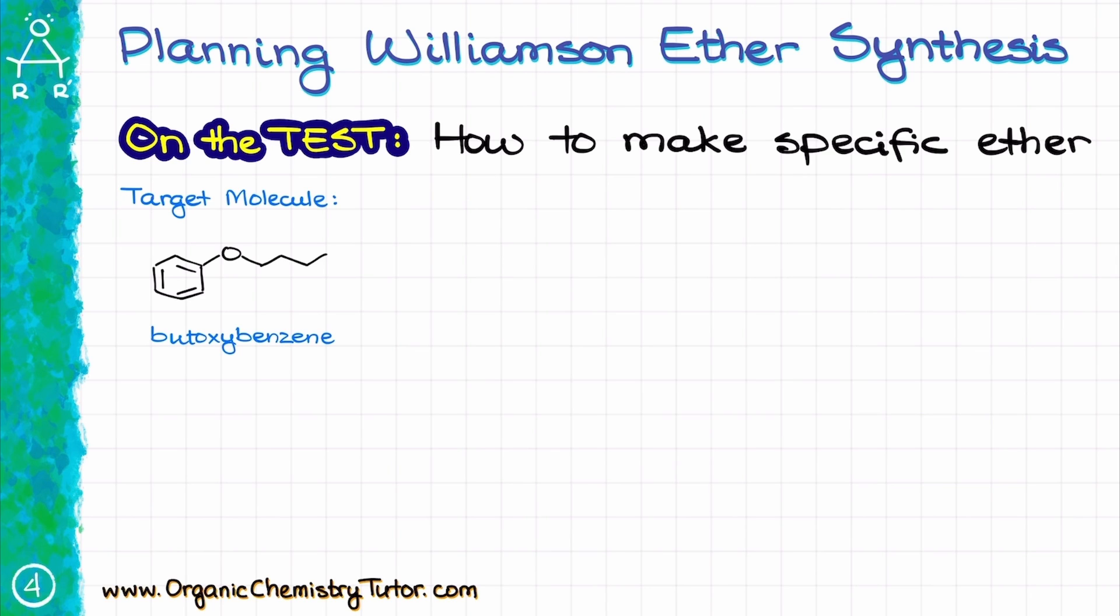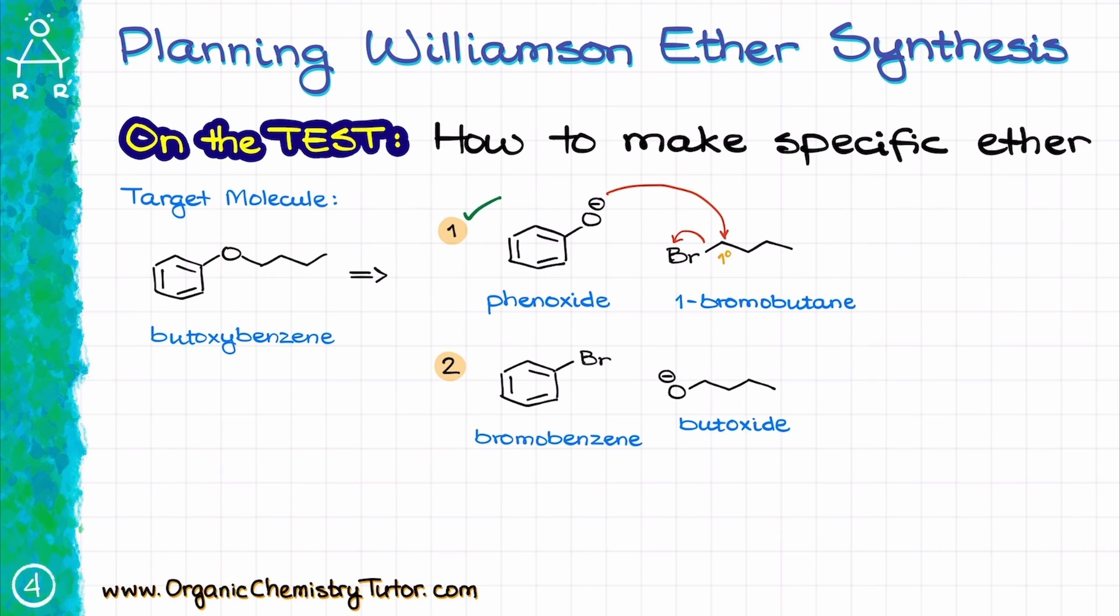So, for instance, let's say we need to synthesize this butoxybenzene. There are two possible approaches to this synthesis. One approach would be to treat my phenoxide anion with primary alkyl halide like 1-bromobutane in this case or the other option will be to react bromobenzene with the primary butoxide. And in this case, the first approach works without any problems whatsoever. Phenoxide acts as a nucleophile and easily replaces the bromine leaving group in our alkyl halide.